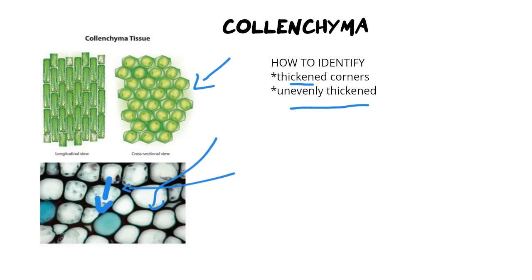Xylem vessels can come in two different structures — we call them either vessels or tracheids. Vessels are round and elongated, whereas tracheids are spindle-shaped, meaning they sort of taper off at the end. A vessel would be like a long cylinder, whereas a tracheid is long as well but the ends kind of pinch in and taper off. So that's the slight difference between the two — round versus spindle-shaped.